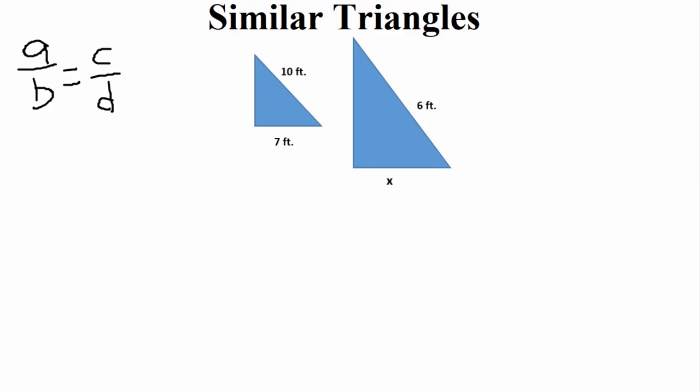Similar triangles are triangles that are similar to each other. They have similar properties, similar angles. They look a lot alike — they look like they're the same shape, but they're different sizes. That's pretty much what similar triangles are: pretty much the same triangle, but a different size.